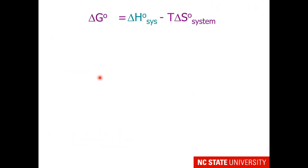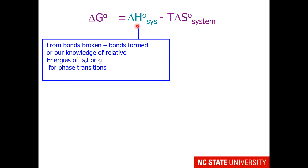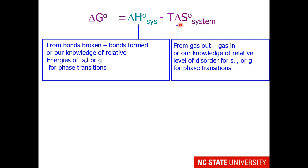As a reminder on thermochemistry, this is our main formula. Delta G0 is equal to delta H0 for the system, minus T delta S0 for the system. How do we know the values of delta H0? We can look at bonds broken minus bonds formed. Or we can use our knowledge of the relative energies of solid, liquid, and gas when we are studying phase transitions. How can we figure out delta S0? We can look at a reaction and figure out gas out minus gas in.